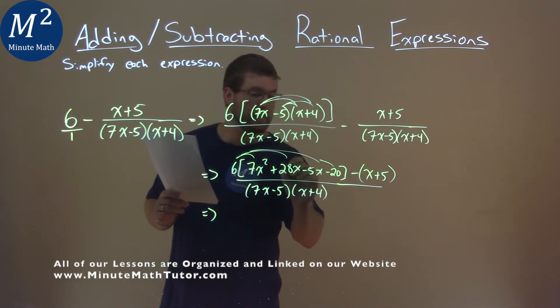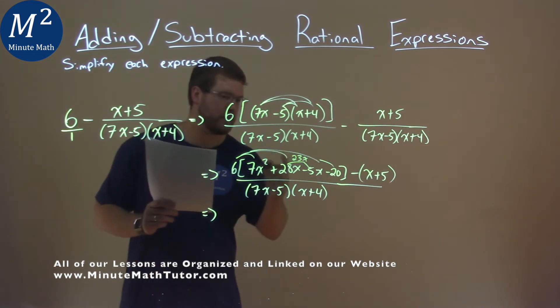Actually combine—sorry, missed a step here. These two together come to 23x. 28x minus 5x is 23x.